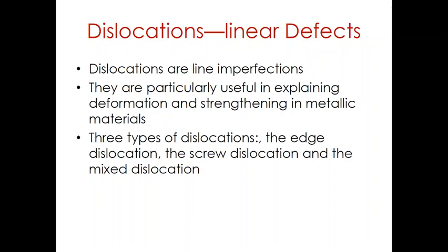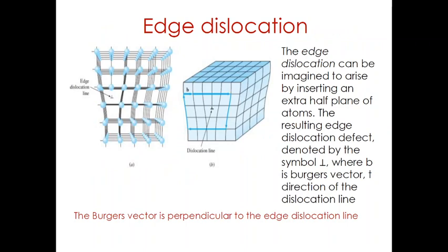We can identify three types of dislocations: the screw dislocation, edge dislocation, and mixed dislocations. The edge dislocation can be imagined to arise by inserting an extra half-plane of atoms. The resulting edge dislocation defect, denoted by the inverse-T symbol, is the line of atoms at the bottom of the inserted plane. The magnitude and direction of displacement are defined by a vector called the Burgers vector, which characterizes the dislocation line. The displacement distance of the atoms around the dislocation is called slip or Burgers vector, and it is perpendicular to the dislocation line.